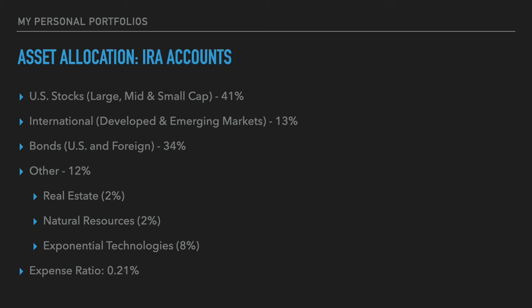In my IRA accounts, I have an asset allocation that looks pretty similar to the asset allocation in my individual account. There's a 41% allocation to U.S. stocks, 13% allocation to international stocks, 34% allocation to bonds, and again 12% allocation to other, which consists of real estate, natural resources, and exponential technologies. The expense ratio of this portfolio is only 21 basis points.